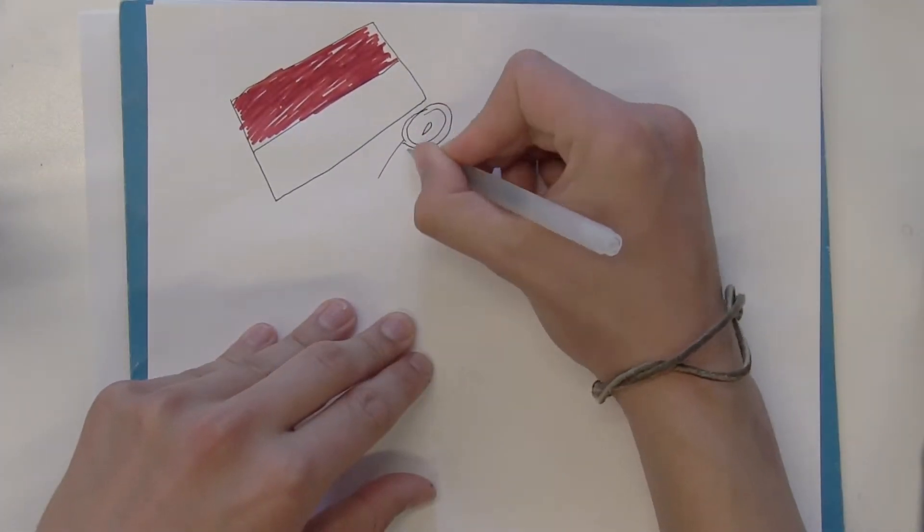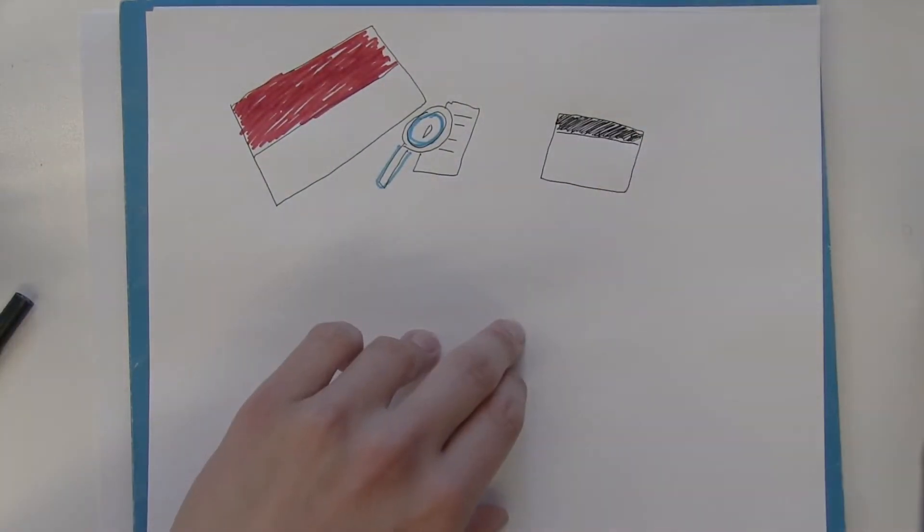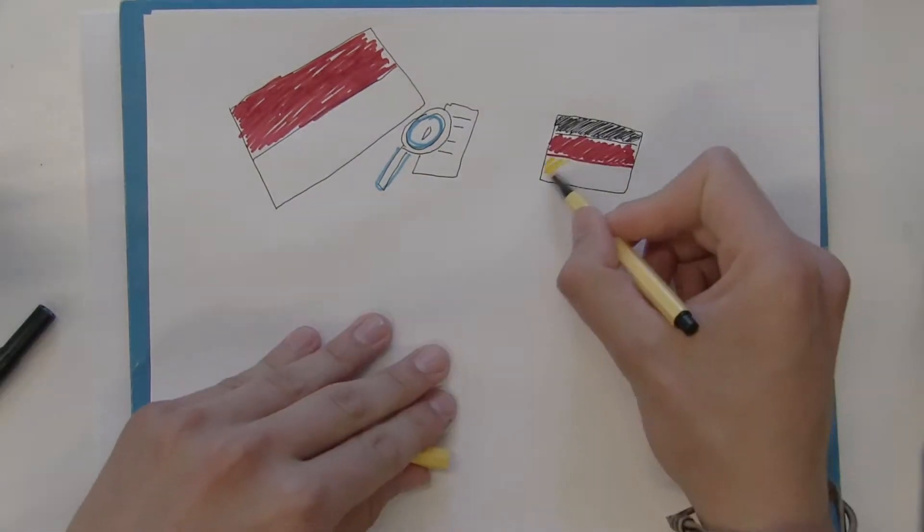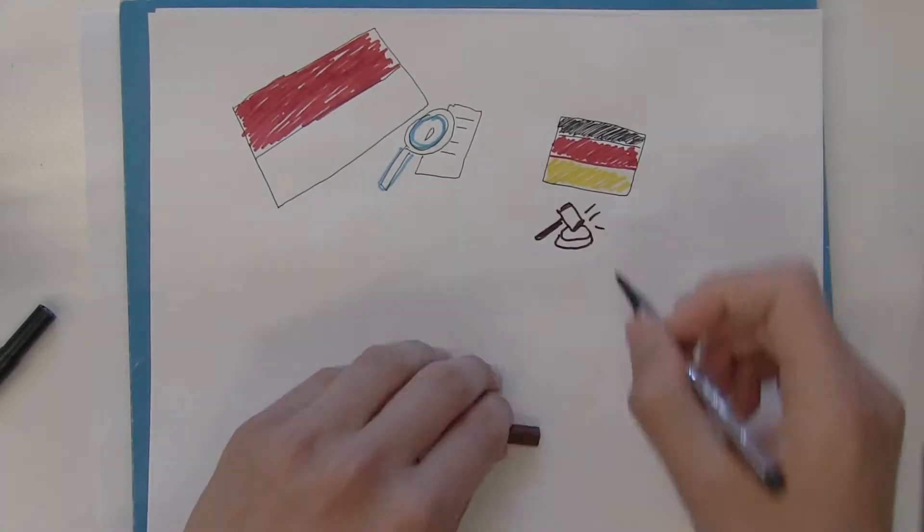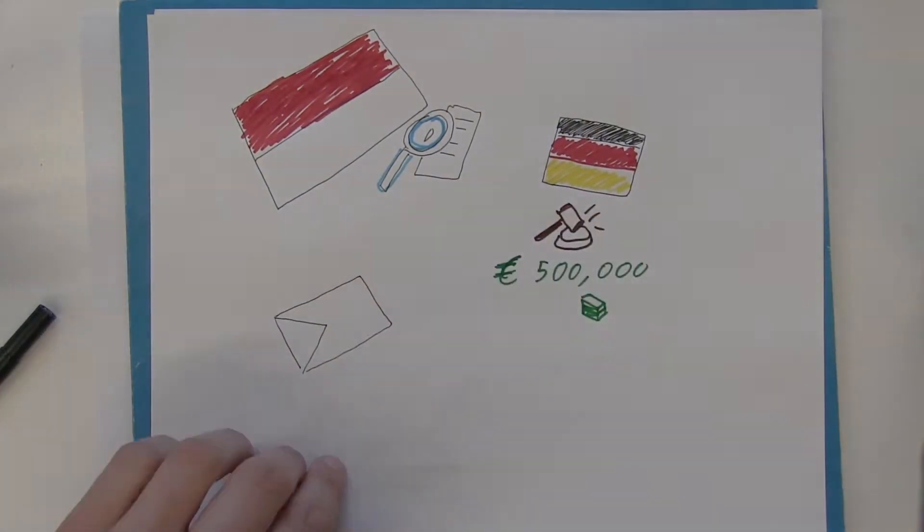Indonesia has established a government agency to monitor news circulating online and tackle fake news. Germany has passed legislation to fine social media outlets up to 500,000 euros for each fake news story it fails to take down from its site.